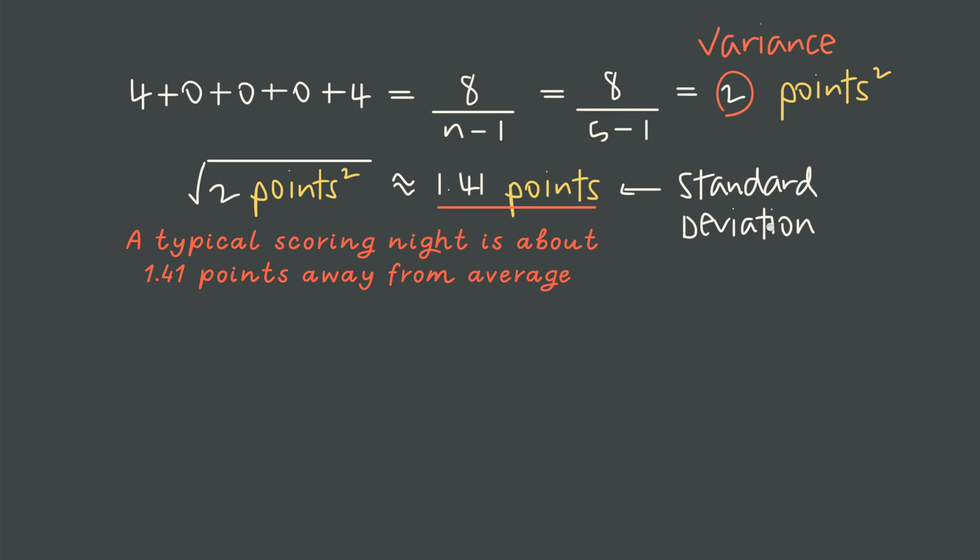And since standard deviation is a measure of consistency or reliability or predictability, it's useful to think about what happens when we manipulate our data set. So remember, player A's score set was 18, 20, 20, 20, and 22. That set of scores gave deviations of negative 2, 0, 0, 0, and 2, which gave squared deviations of 4, 0, 0, 0, and 4, which then gave a variance of 2 and a standard deviation of square root 2 or 1.41.